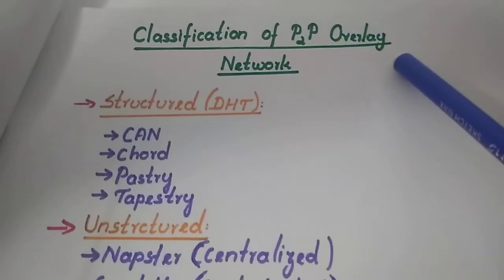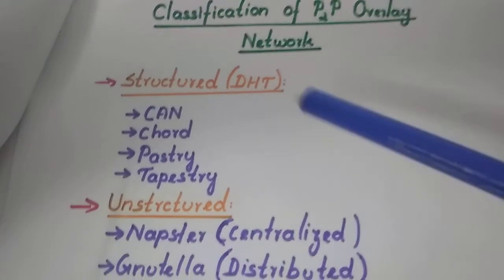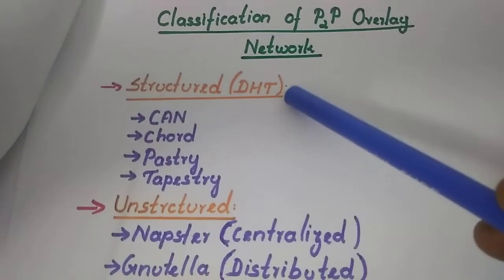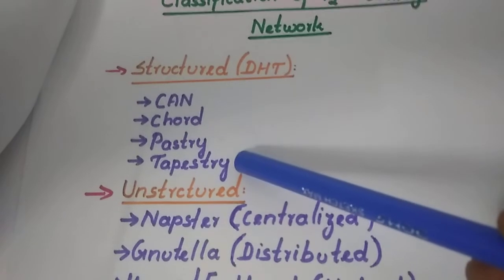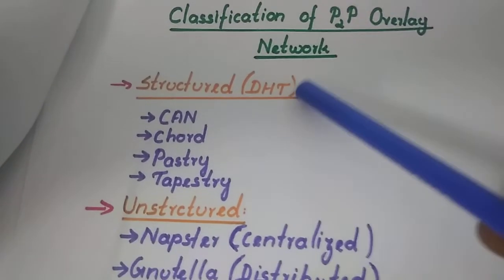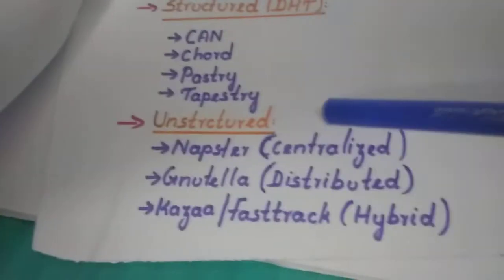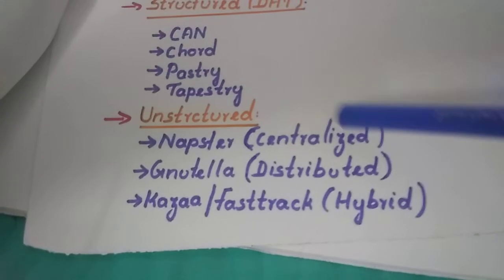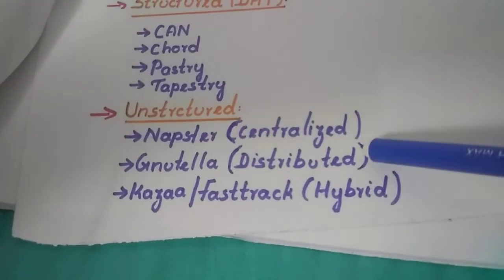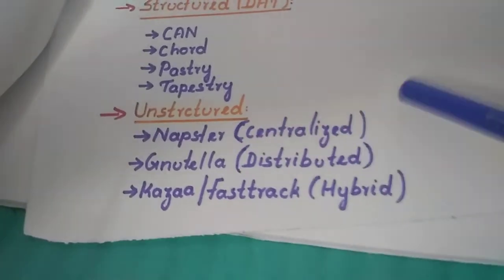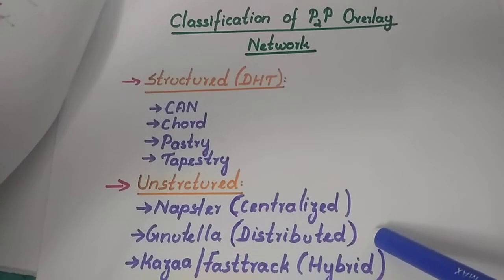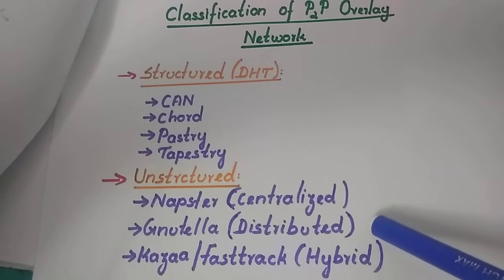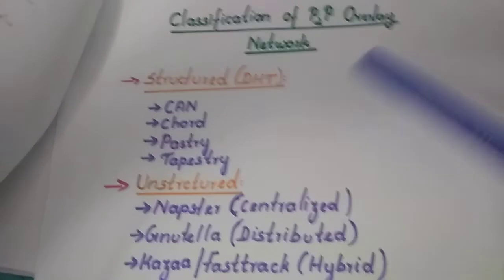The peer-to-peer overlay network is classified into two types: structured and unstructured. The structured network is implemented based on a distributed hash table mechanism. Chord, Kademlia, Pastry, and Tapestry are examples of structured peer-to-peer overlay networks. In the unstructured category, there are three different classifications: centralized, distributed, and hybrid. Napster is a centralized unstructured peer-to-peer overlay network. Gnutella is a distributed unstructured peer-to-peer overlay network. Kazaa and FastTrack are hybrid unstructured peer-to-peer overlay networks.